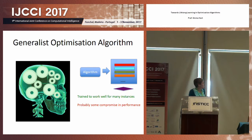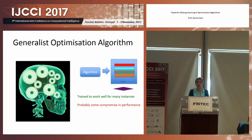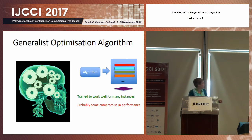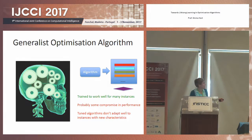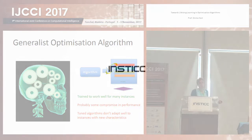There's also a different problem: if some instance arrives now that has very different characteristics than a previous instance — maybe the type of customer has changed, the type of schedule you're trying to create has changed, or the things you're manufacturing have changed in size, which causes the machines to operate differently — now we've got something with very different instance characteristics, and it's quite likely that the algorithm tuned to work well on the original set of instances won't work well on this new instance.